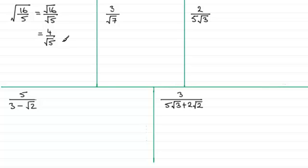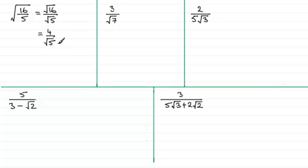If we did this on a calculator it didn't actually display this value — what it does is it rationalises the denominator. What this means is that whenever we get square roots in the denominator of a fraction, we have a method that we use to get rid of the square root, and this method is called rationalising the denominator.